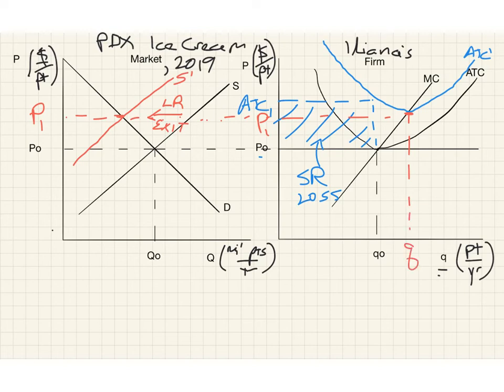So there's going to be fewer firms in this industry with this increase in licensing costs. And each of those is going to be producing a little bit more ice cream is the prediction of our model. And ice cream is going to be a little more expensive in this market or a lot more depending on how big the license fee increase was. And there'll be less ice cream sold. Okay. So that's the analysis.